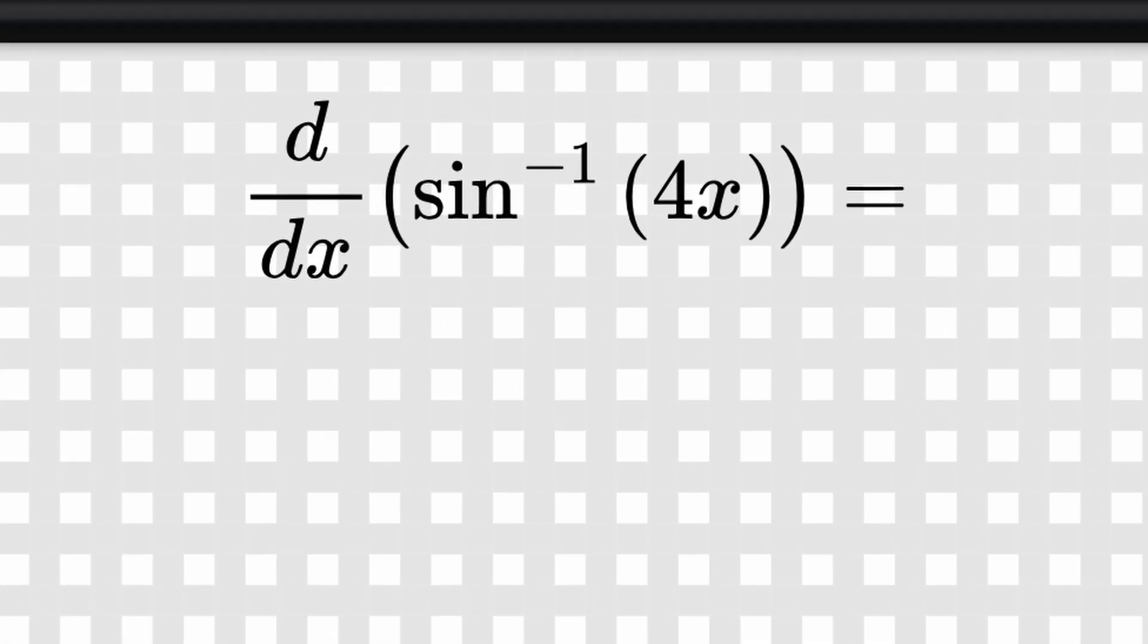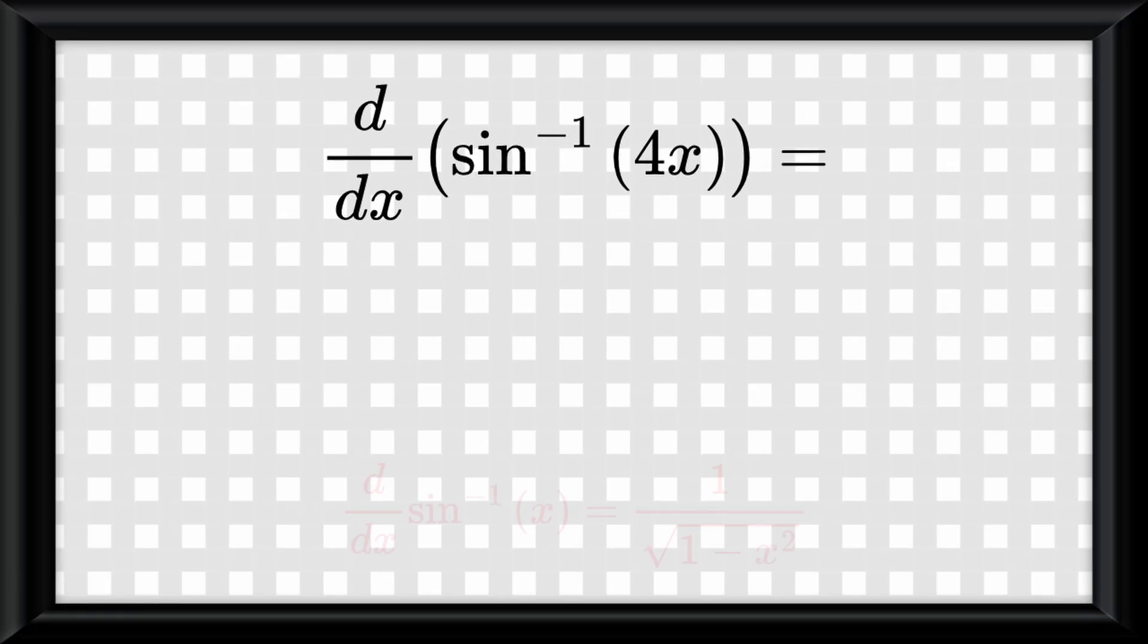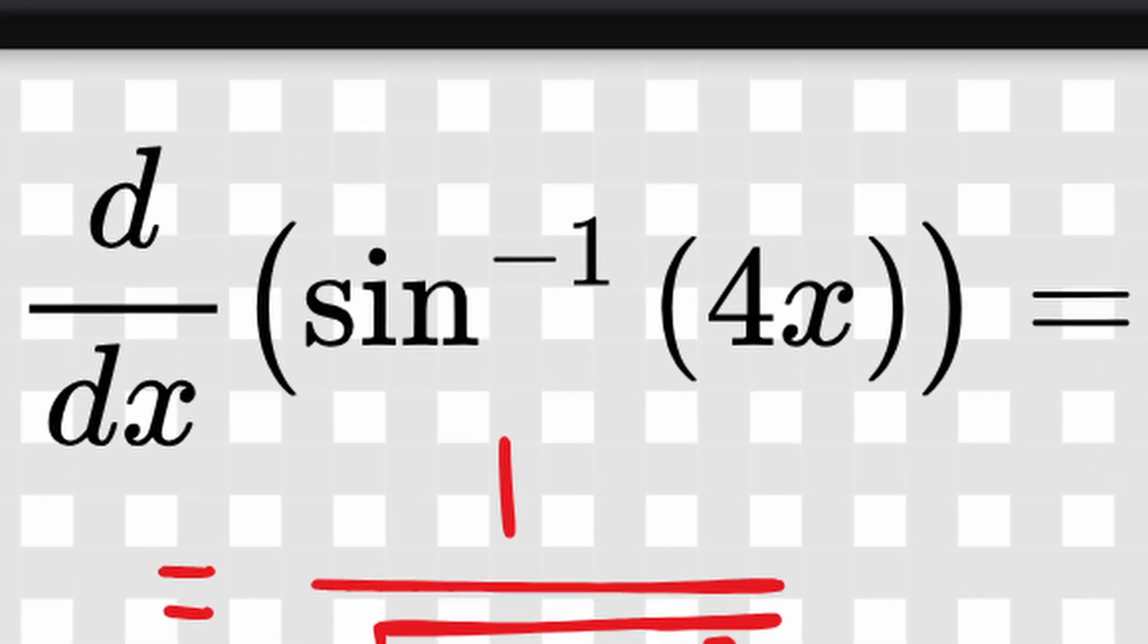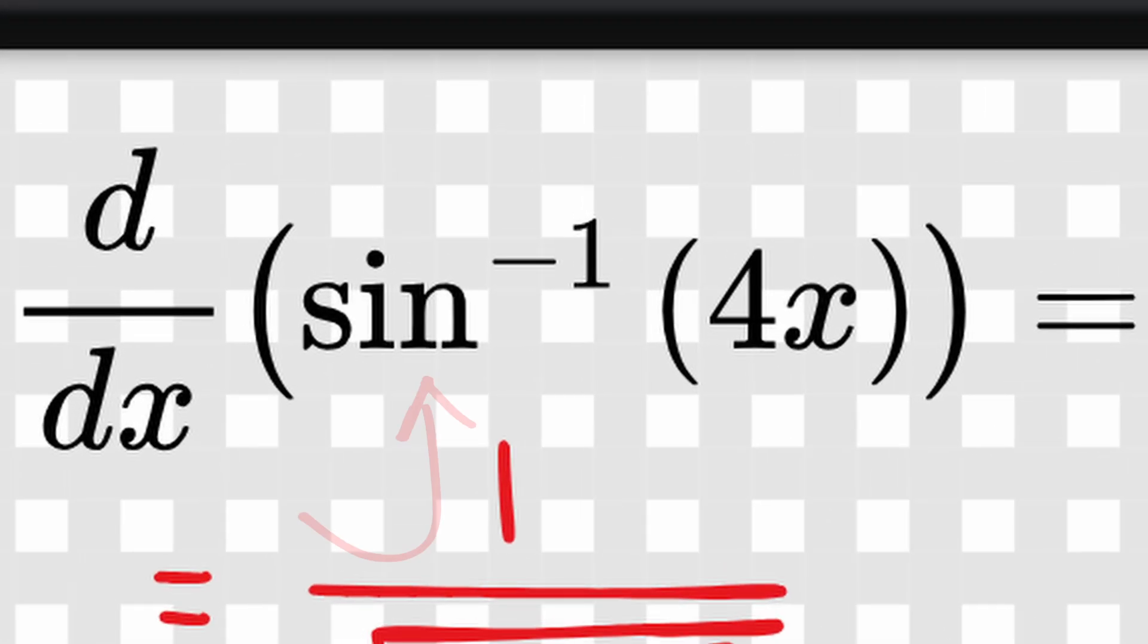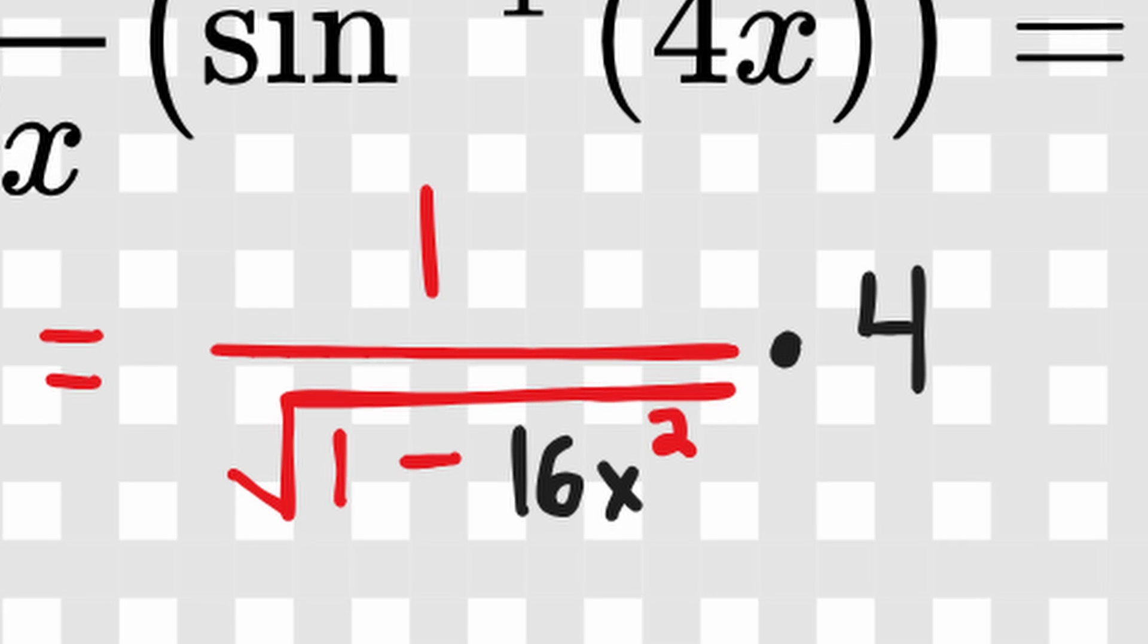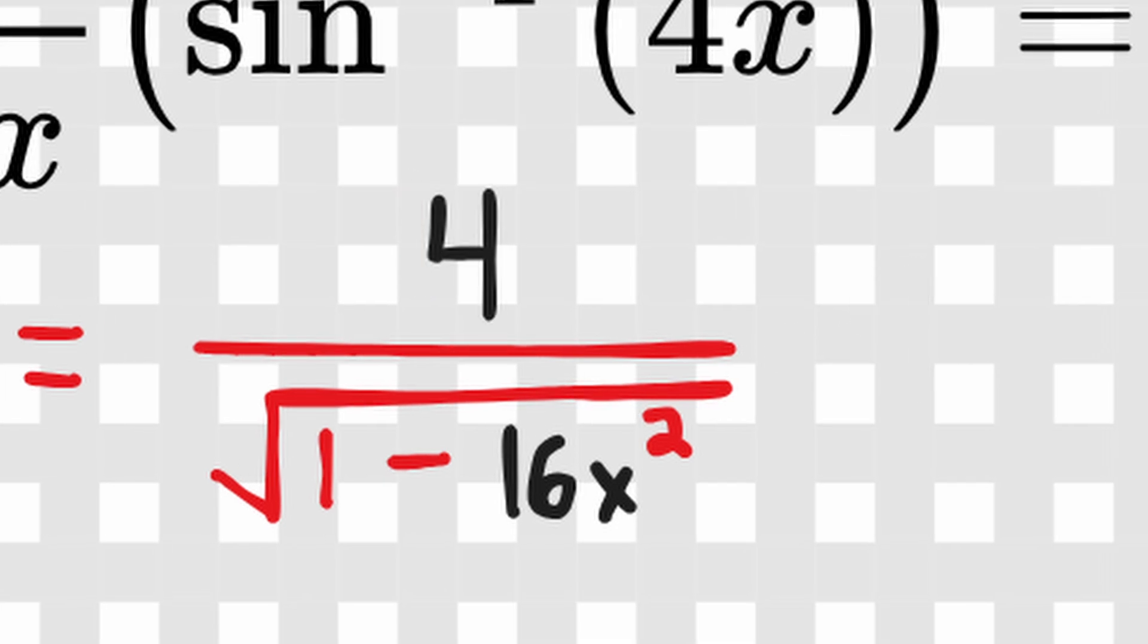The derivative of inverse sine of 4x. So let's pop the formula for inverse sine on the screen. So let's plug everything into that formula, so 1 over the square root of 1 minus that 4x we had earlier squared, so it would just be 16x squared. But this is a function inside of another function, because you have the inverse sine and you have the 4x. So we now need to do the chain rule and multiply it by the derivative of the inner function, which is 4. Then this is our final answer. And yes, you can put the 4 on top if you want to.